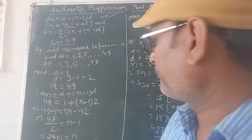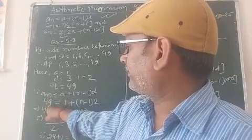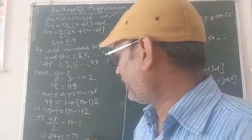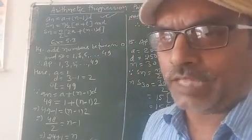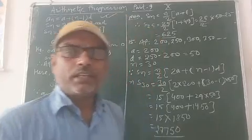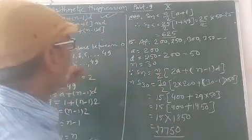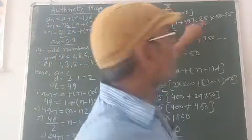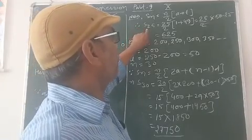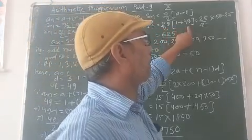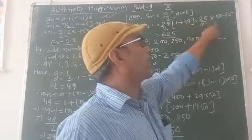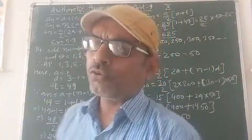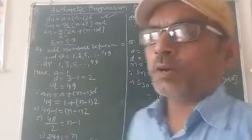So An equals 49, a equals 1 plus n minus 1 into 2. When we solve this formula, the value of n is 25. Now we have n. So Sn equals n by 2 into a plus l. Therefore S25 equals 25 by 2 into 1 plus 49, which equals 25 by 2 into 50 equals 625.